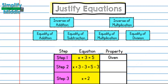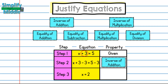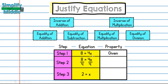For the next example, x + 3 = 5 is given. X is being added by 3, so I do the inverse by subtracting 3 — using the inverse property of addition, since a number plus its opposite equals 0, leaving just x on one side. Because I subtract 3 from both sides to keep the equation balanced, that is the equality property of subtraction.